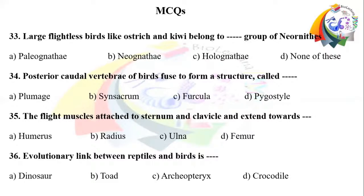Question number 33: Large flightless birds like ostrich and kiwi belong to the dash group of neurons. Option A: Palaeognathae. Option B: Neognathae. Option C: Holognathae. Option D: none of these.